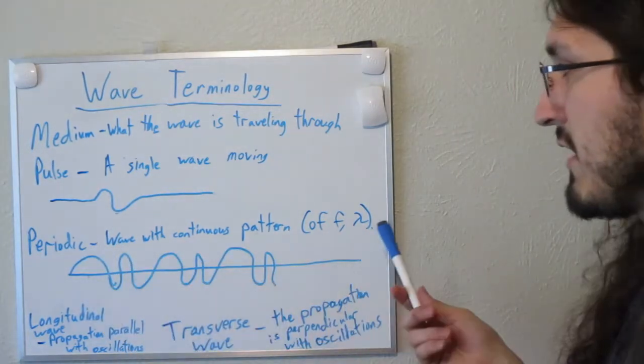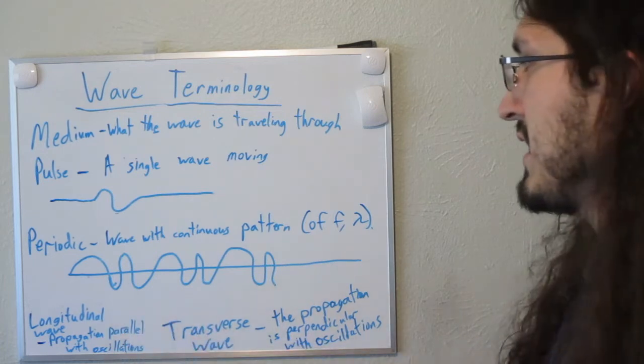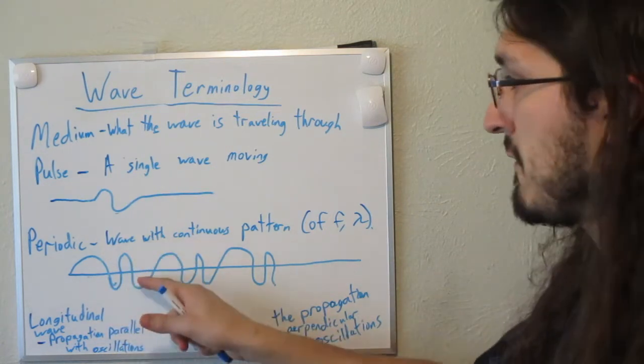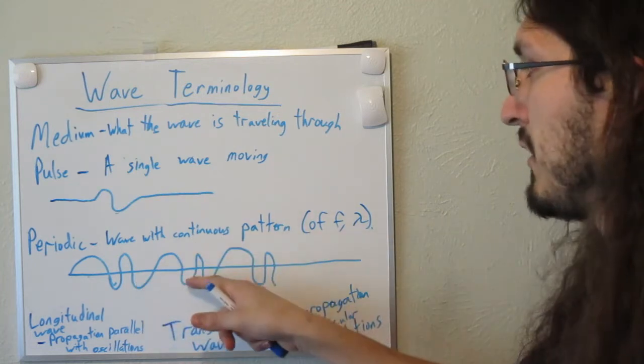Okay, I've attempted to draw a periodic wave here, where you can see there's a repeated pattern. A big wave followed by a small wave, and then it repeats itself. A big wave followed by a small wave.